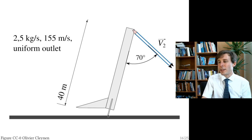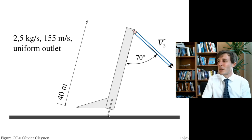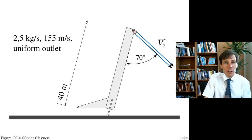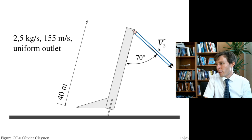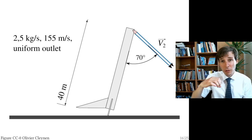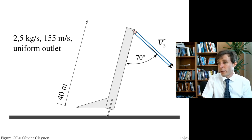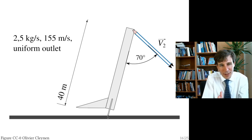The rocket is standing on this one leg and starting to fall over. There is a small thruster — a rocket engine — which takes fuel from inside and expels it with velocity v₂. It tries to maintain the rocket's position, and we want to calculate the moment this thruster exerts around the center of the rocket.